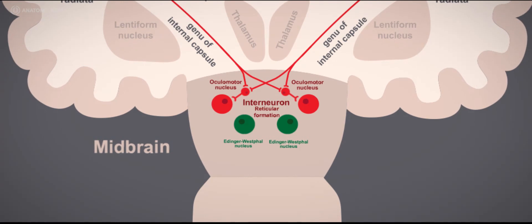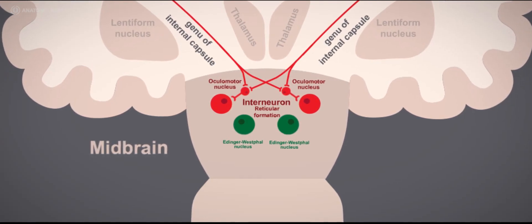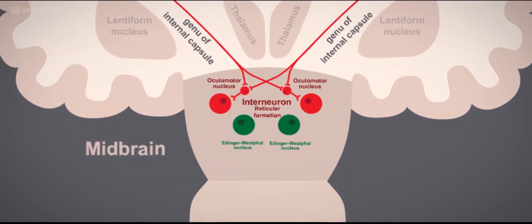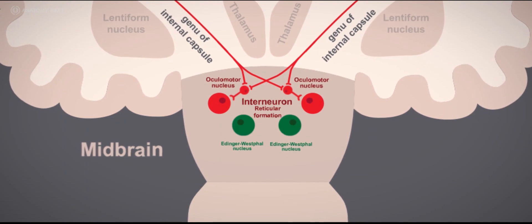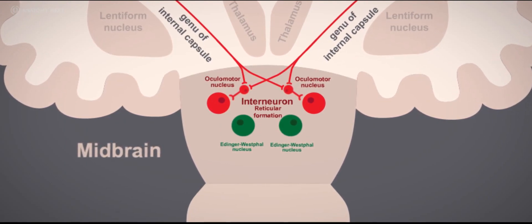So, back to the subject at hand. We have figured out the central part of the oculomotor nerve pathway, and we can now proceed with its peripheral part.